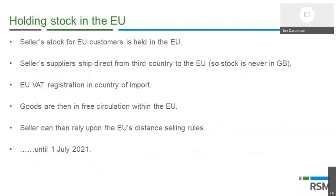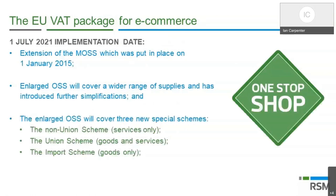Another model businesses have adopted is to move stock into the EU, which leads to a VAT registration requirement in the country of import. The Netherlands and Belgium have been the two main preferred territories for businesses adopting this route. Once goods are in free circulation in the EU, the seller can rely on the current distance selling rules until the 1st of July, when the new e-commerce changes take over.